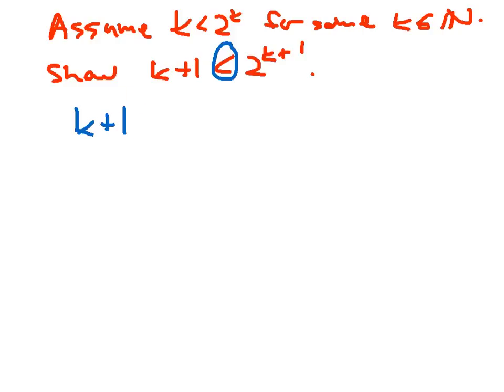So k plus 1 is definitely less than k plus, watch this, k plus k. I just make this little replacement right there, and I pick up a new inequality. Now why did I do that? Well again, I'm looking ahead to proving this inequality right here, and so I need to get that inequality in the picture somehow. And also, it allows me to use my inductive hypothesis.